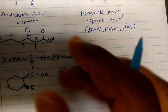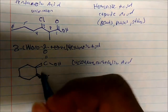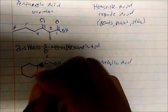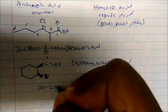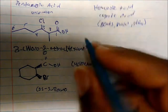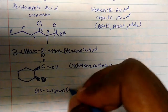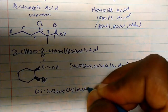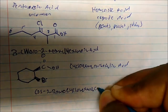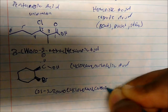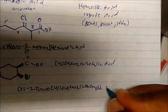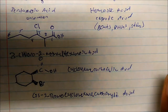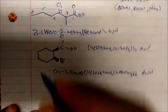At carbon 2, we have the bromine. Remember, these are cis with respect to each other, so this would be cis-2-bromo cyclohexane carboxylic acid. So this is how we name cyclo-carboxylic acids.